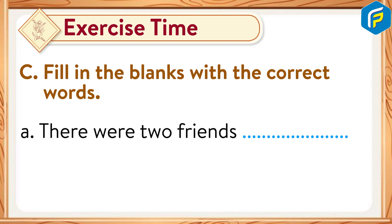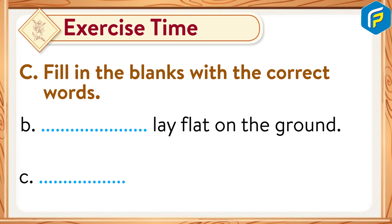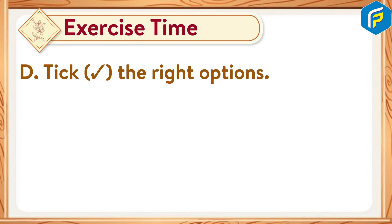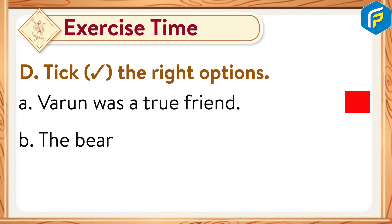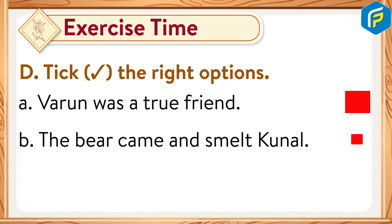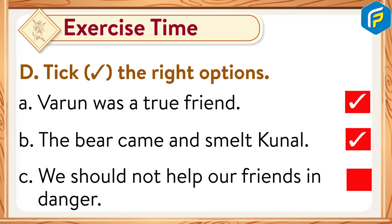Fill in the blanks: A: There were two friends — Varun and Kunal. B: Kunal lay flat on the ground. C: Varun climbed the tree. Tick the right options: B is correct — the bear came and smelt Kunal.